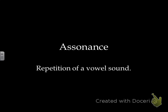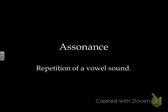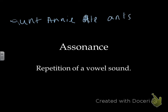Assonance is similar to alliteration, except it's the repetition of a vowel sound, and it doesn't have to be at the beginning of a word. For example, 'the cat sat on the hat' repeats that short A sound throughout the line. Or 'Aunt Annie ate ants' also repeats a vowel sound, this time at the beginning of words.